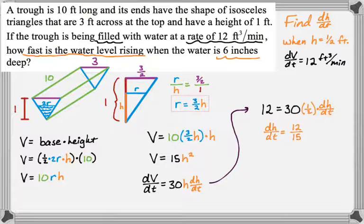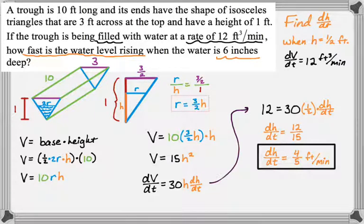Sorry, because 30 times 1 half is 15, obviously. And that simplifies. So, dh/dt is 4 fifths, but you're not done with the problem until you put the units on. So, we're talking about feet, and we're talking about minutes, and this is a height, so it'll just be feet per minute. And there you go.